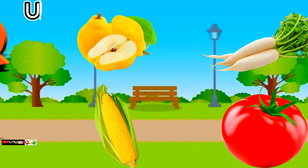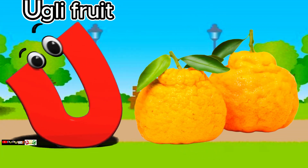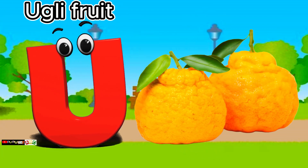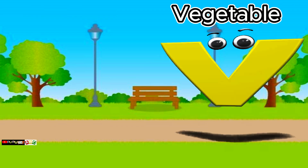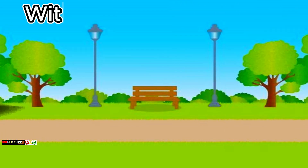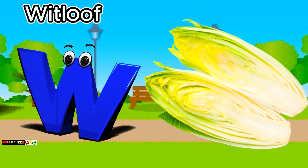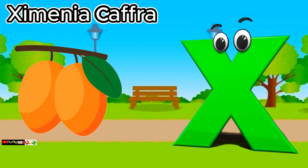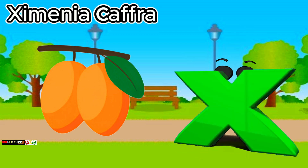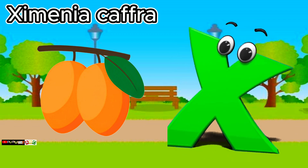U is for ugly fruit. U, u, ugly fruit. V is for vegetables. V, v, vegetables. W is for whitloaf. W, w, whitloaf. X is for ximenia. X, z, ximenia.